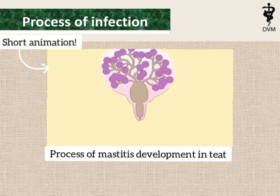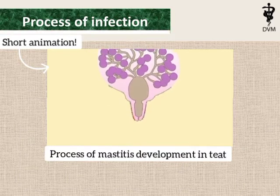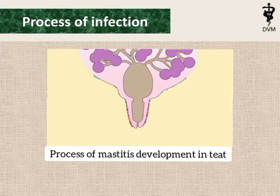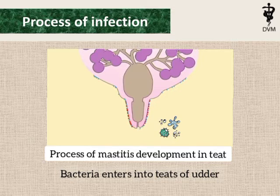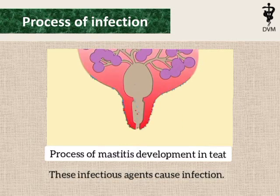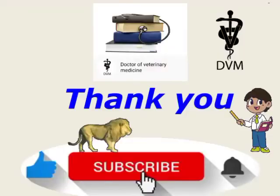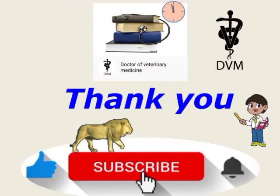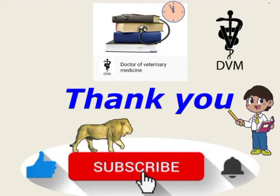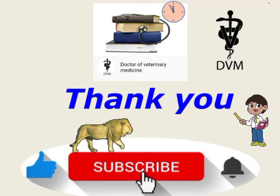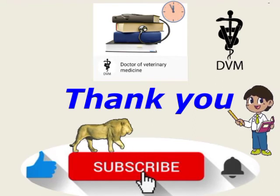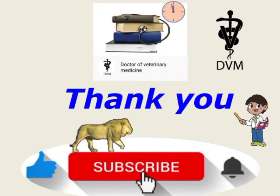Here is a short animation about mastitis — must watch. Bacteria gets entry into the teats of the udder and invades inside, causing infection. The cardinal signs are shown and mastitis develops in the infected animal. Thank you very much for your attention, and wishing you the very best for your future. For any questions, comment below.